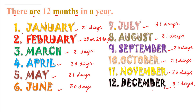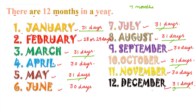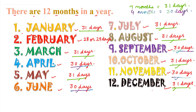Do you know how many months have 31 days? Let's count: January, March, May, July, August, October, December — 7 months have 31 days. And how many months have 30 days? April, June, September, November — 4 months have 30 days. And only February has 28 or 29 days. So February is the shortest month of the year.